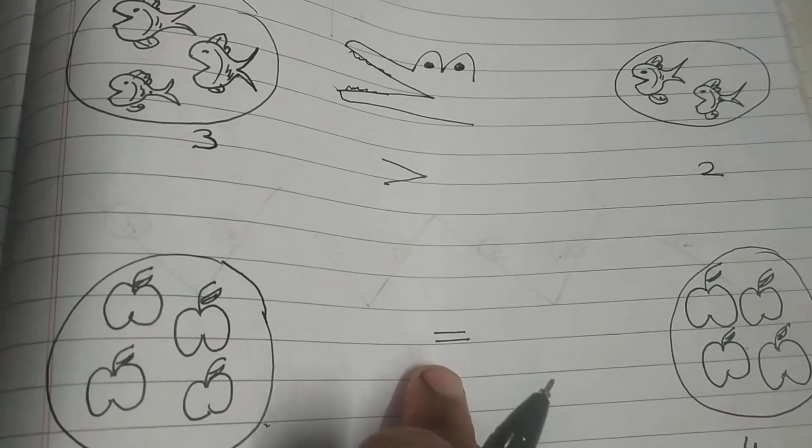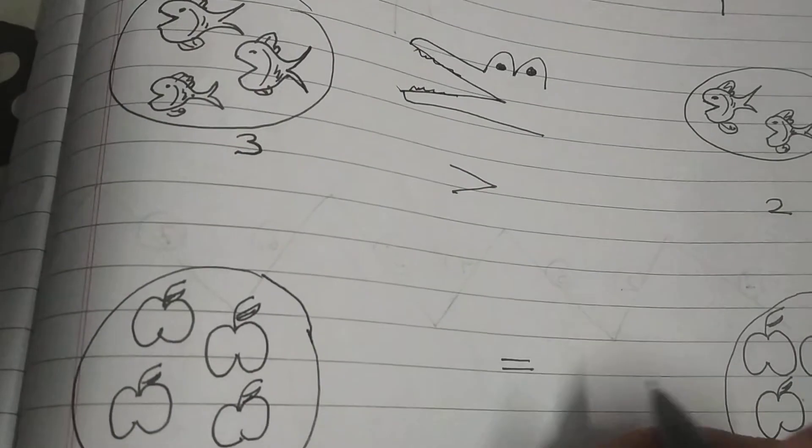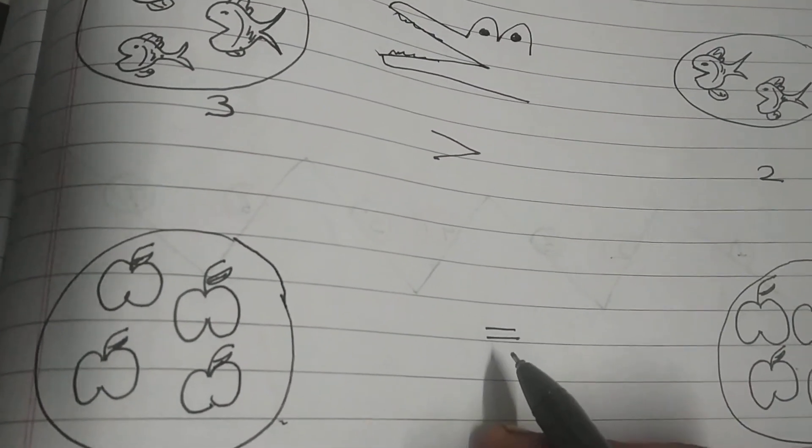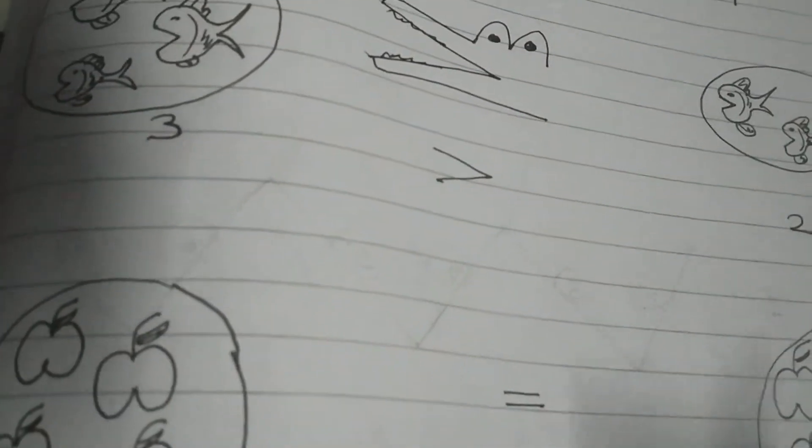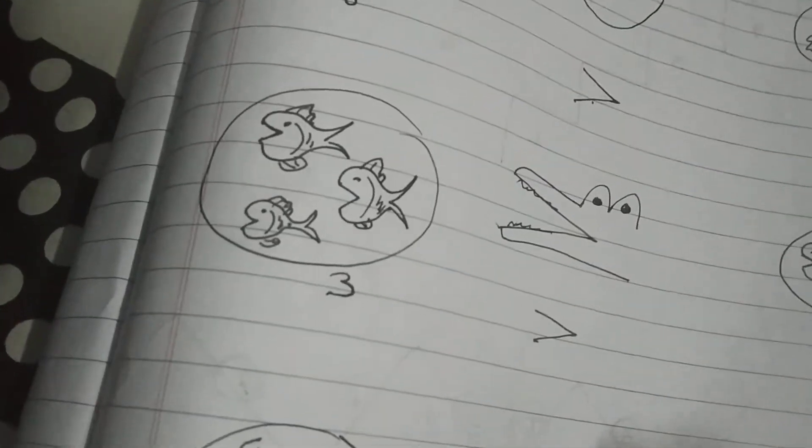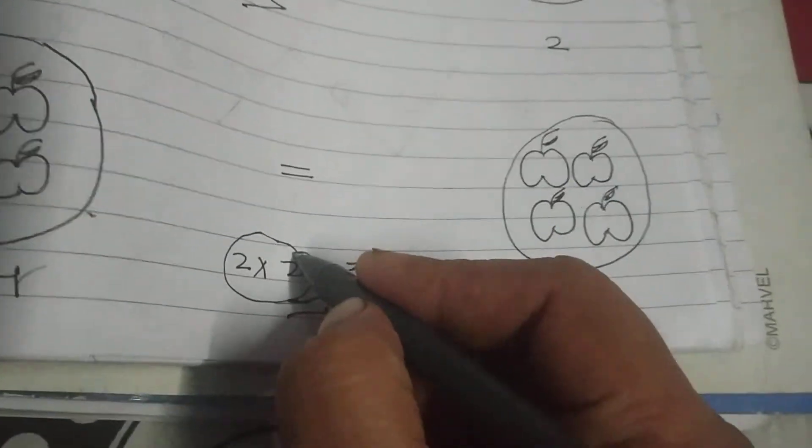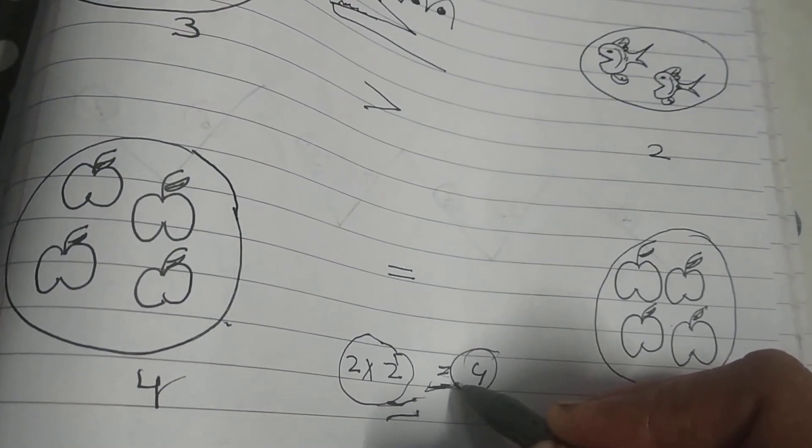Jab aap table likhte hain, toh aap ye sign lagate hain. 2, 2's are 4. You remember this sign? This is equal to sign. Equal to means ki ye iske berabar hai. Jaise jab aap tables mein likhte the, 2, 2's are 4. I'll write it here. 2, 2's are 4. That means ki jab aap 2 ko 2 se multiply kerte hain, this gets equal to this 4. This is the sign of equal to.